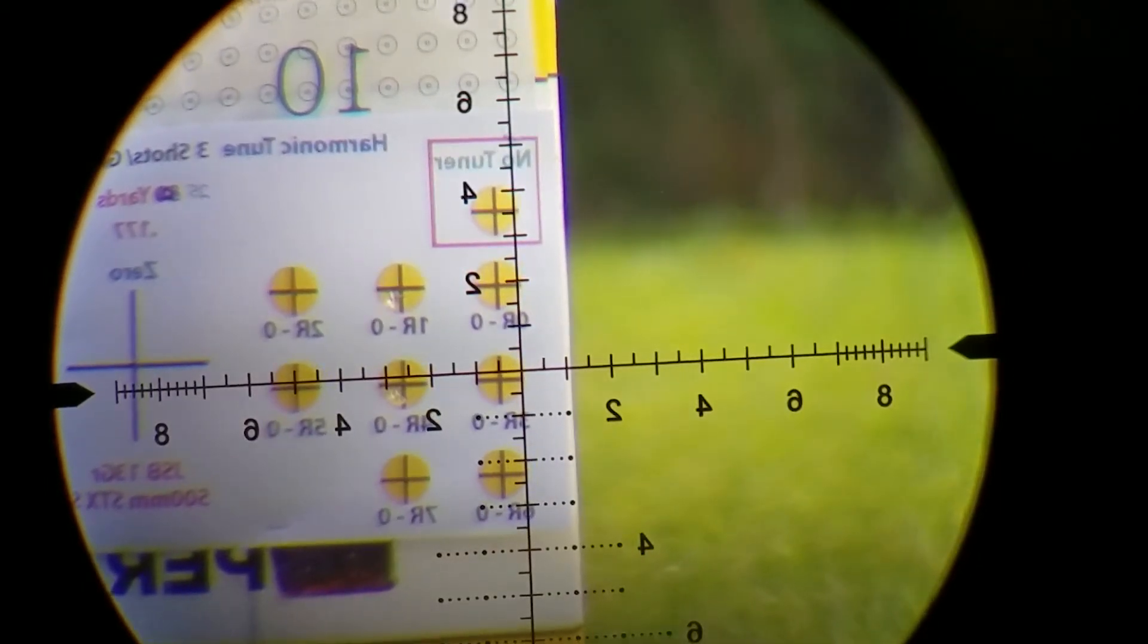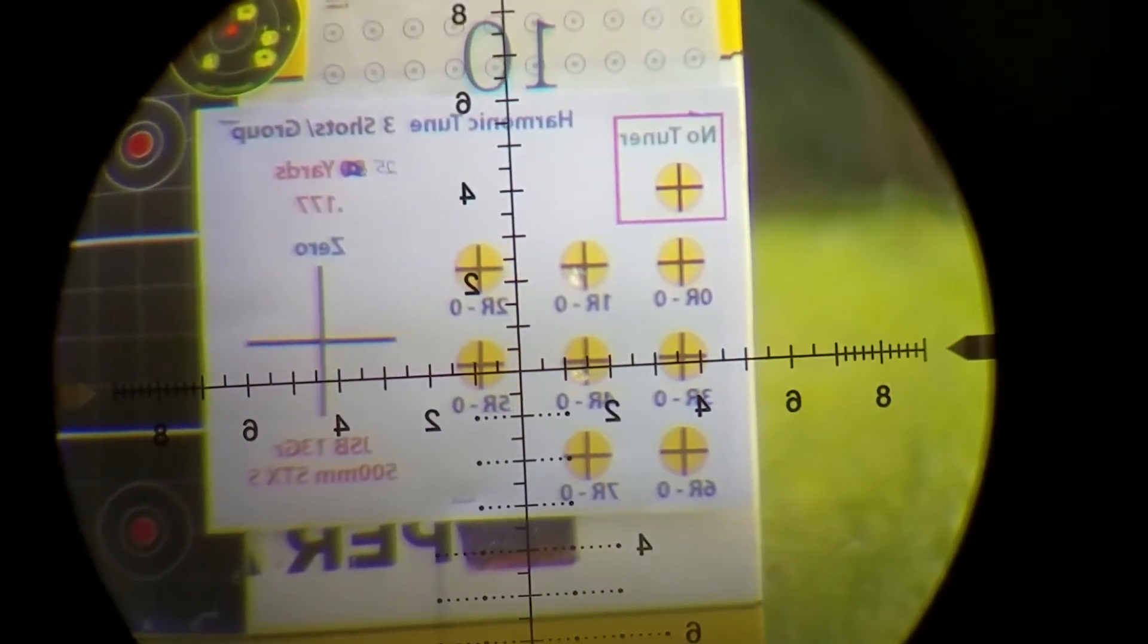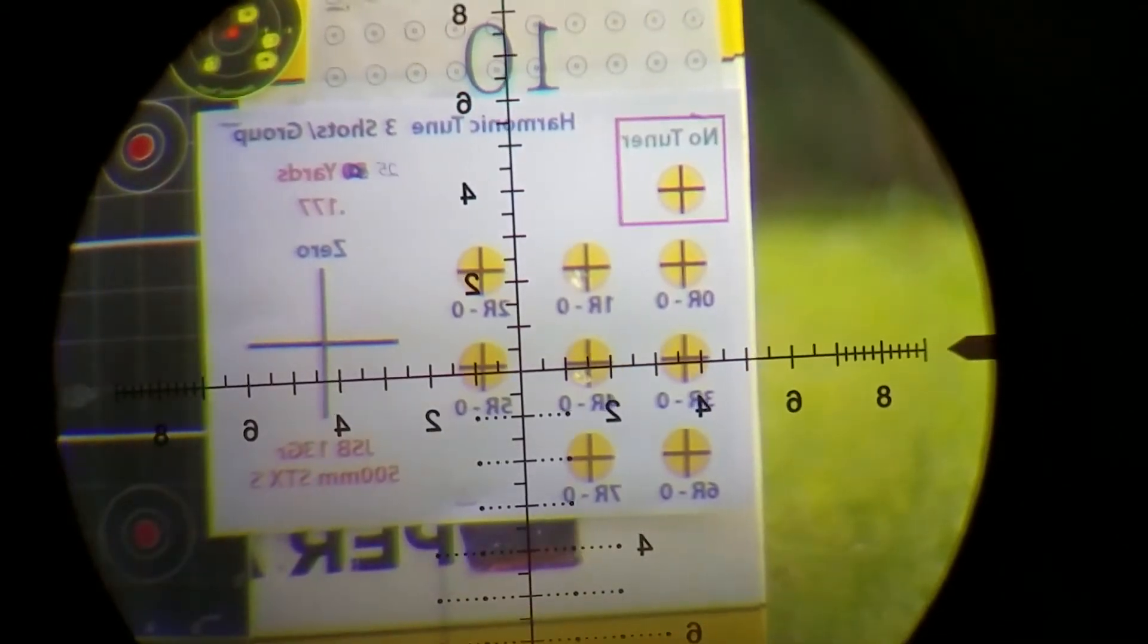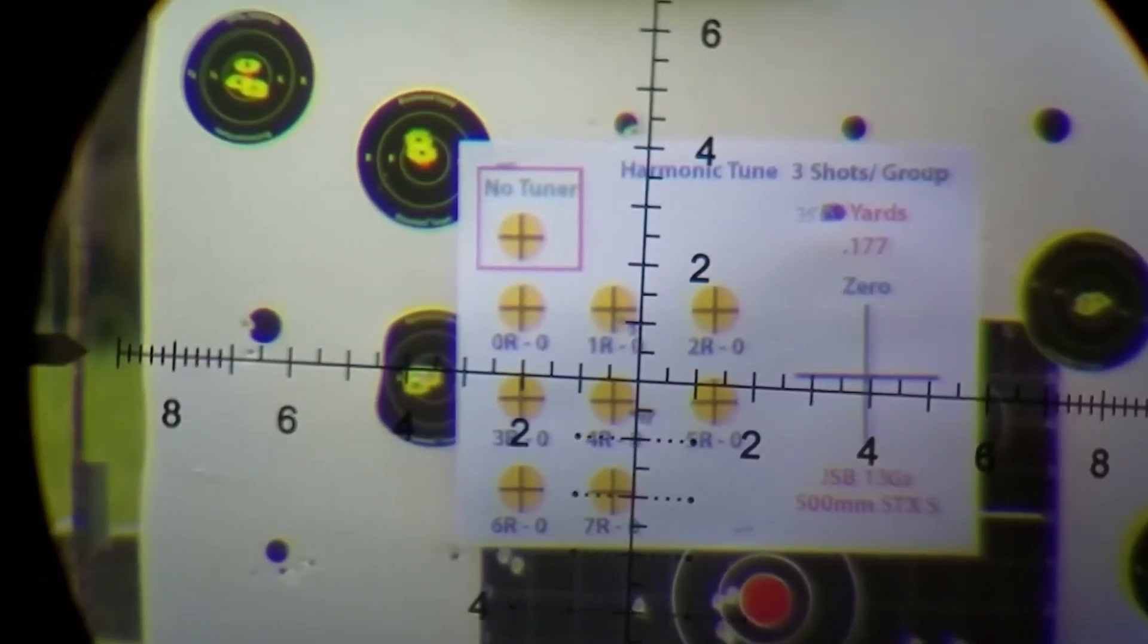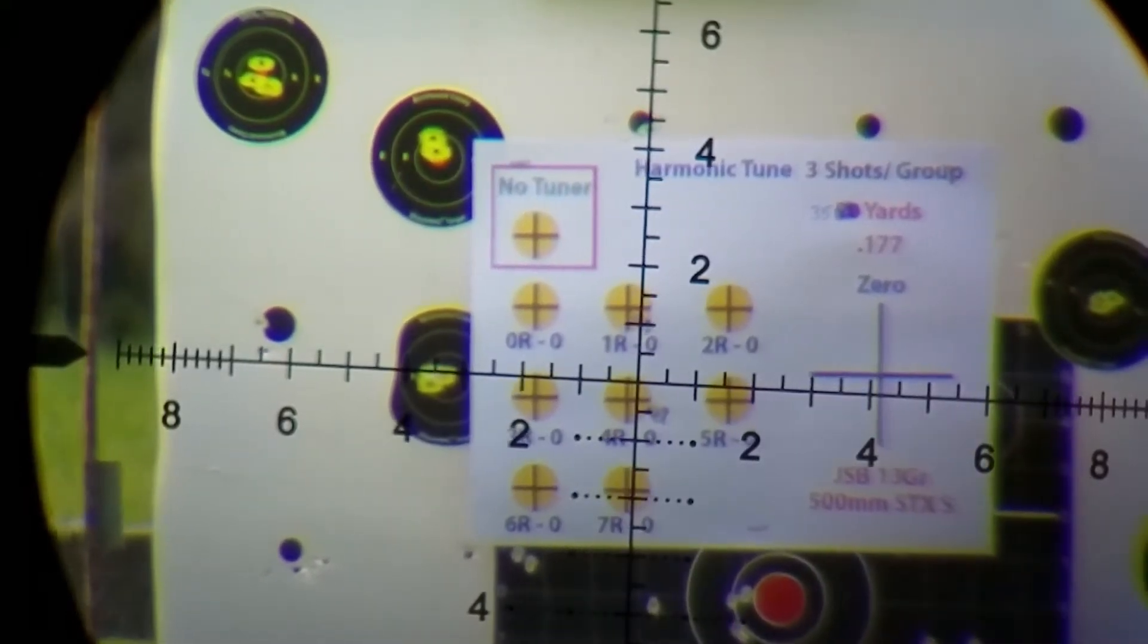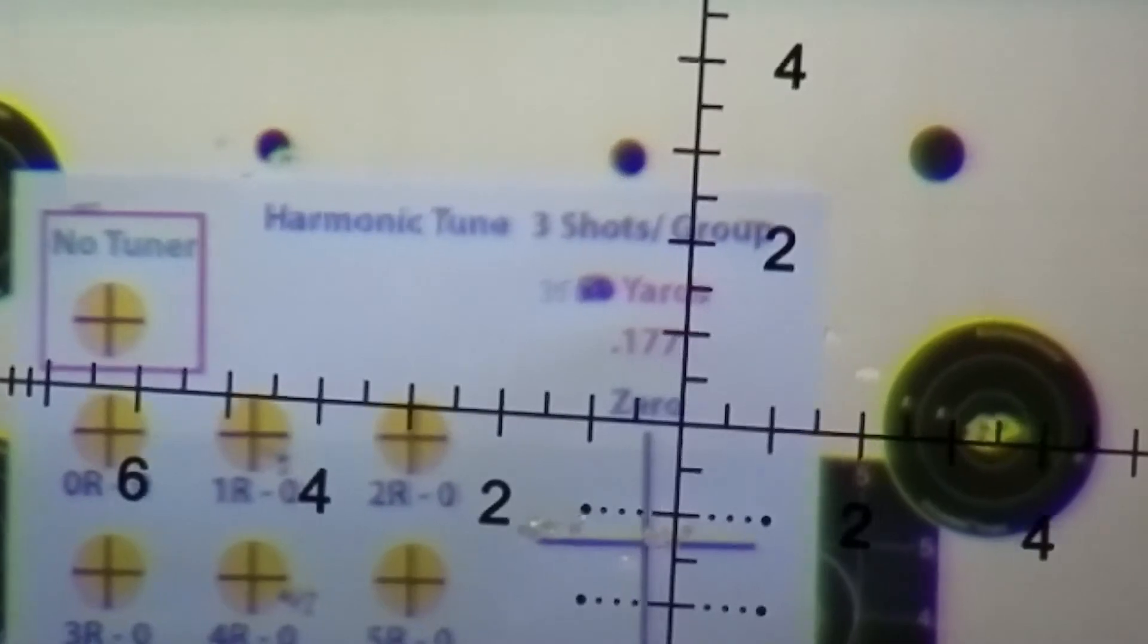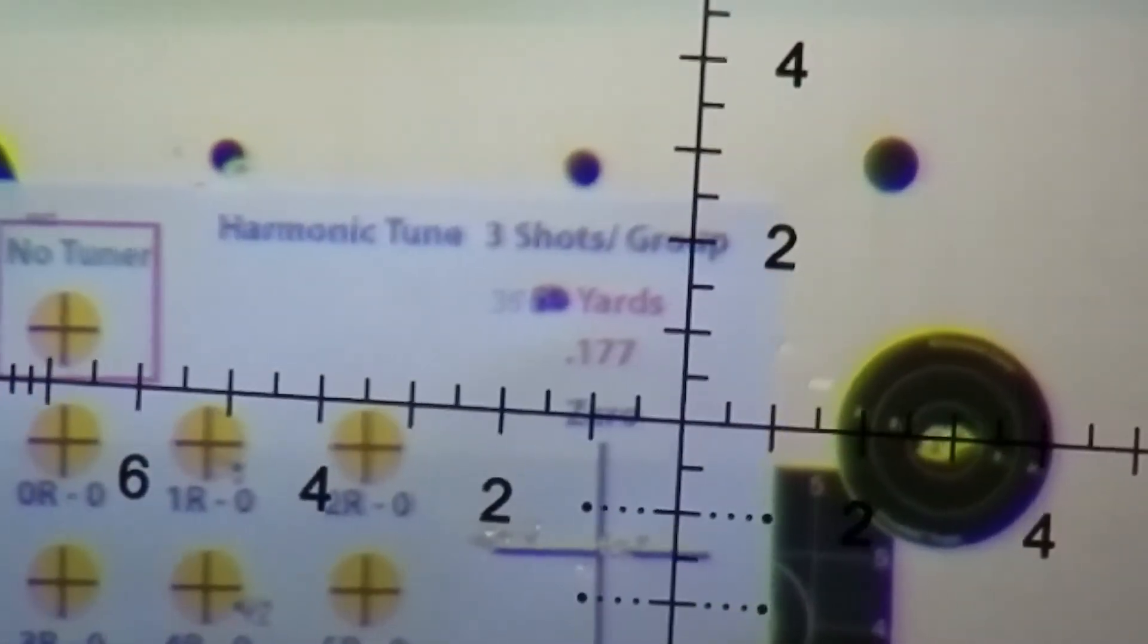I'll bet 1R has the tightest group, those holes are right next to each other, I mean practically on top. That's the one I want to see. I think everybody wants to see that. That's the one R.